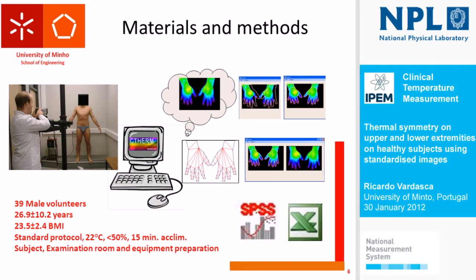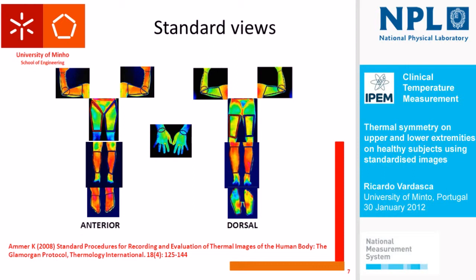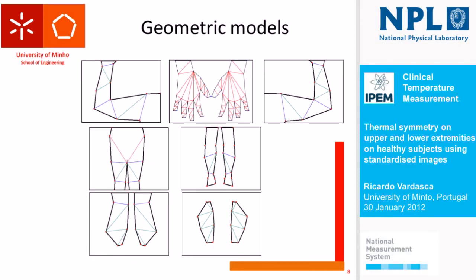I built geometrical models based on the regions of interest defined in medical models, along with a method to standardize the images. Remember: you can only compare objects in images if they are equal in shape and position. Here are the regions of interest I used for the upper and lower limbs, defined by Kurt Hammer in the Lamborghini protocol. All of these regions of interest have physiological backgrounds that justify them. The geometrical models I created use triangles because the triangle is the simplest shape to represent an object, which proved very useful for the analysis.